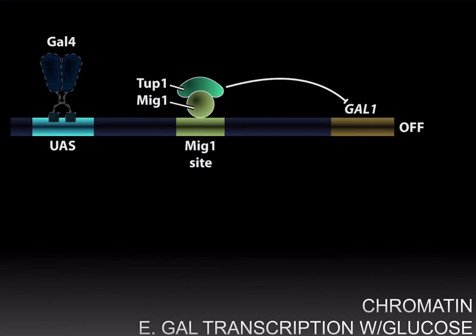Let's see an example of how histone acetylation or deacetylation can impact transcription and affect phenotypes. Going back to the regulation of the GAL1 gene: if there is no galactose, GAL80 binds to the GAL4 activation domain and prevents activation of GAL1. However, when galactose is present, galactose binds to GAL3, leading GAL3 to bind GAL80, relieving repression of the GAL4 activation domain and allowing transcription.